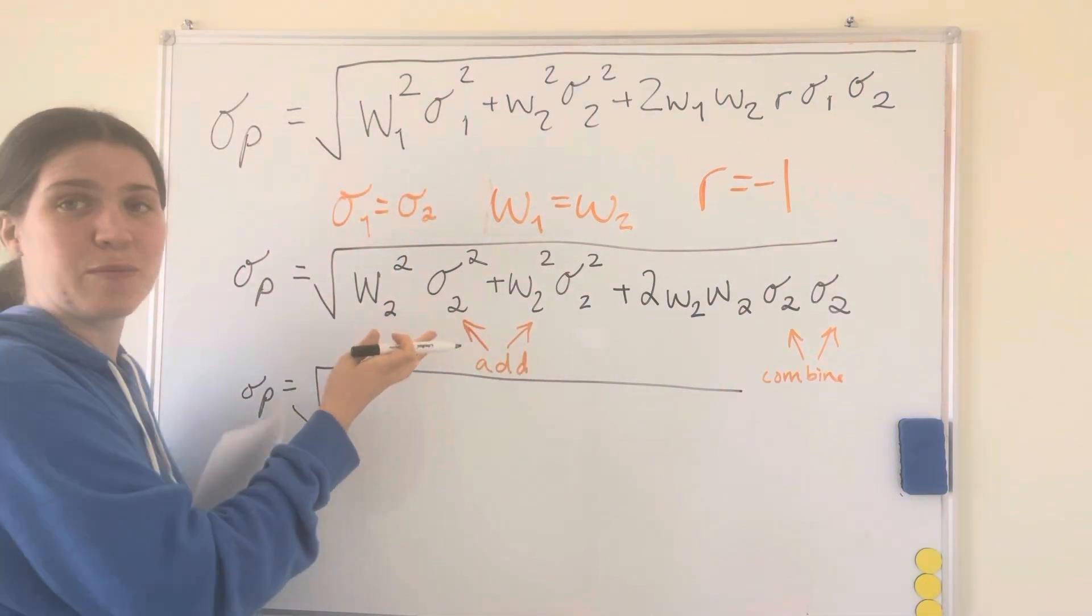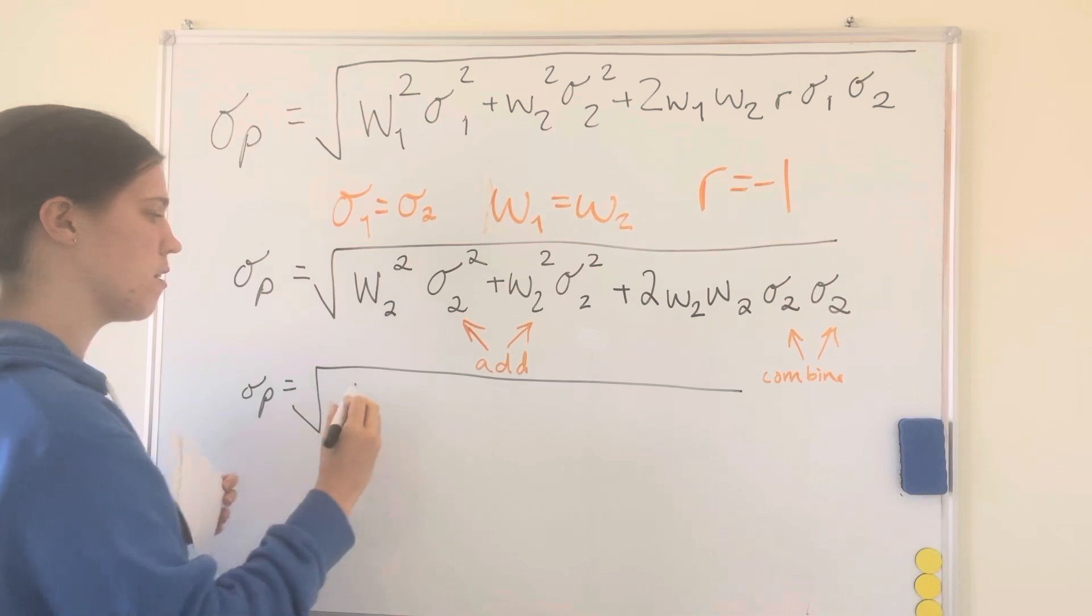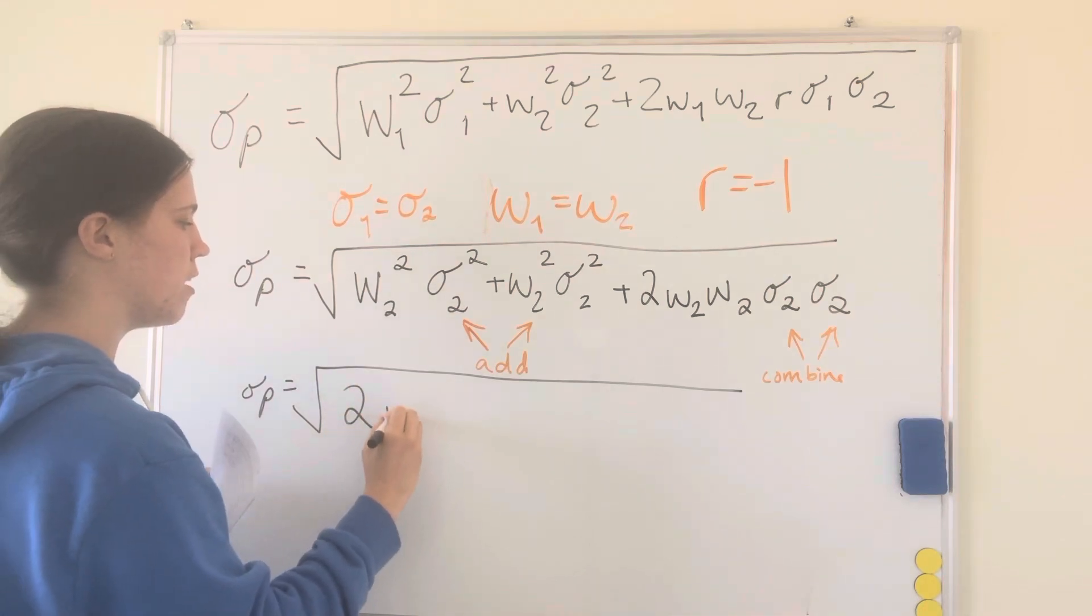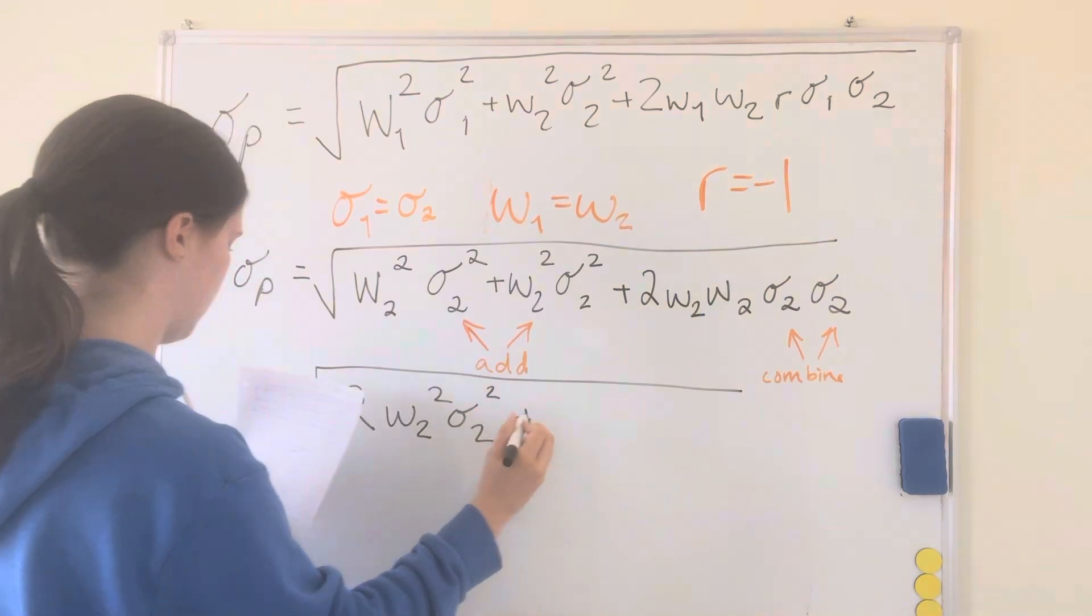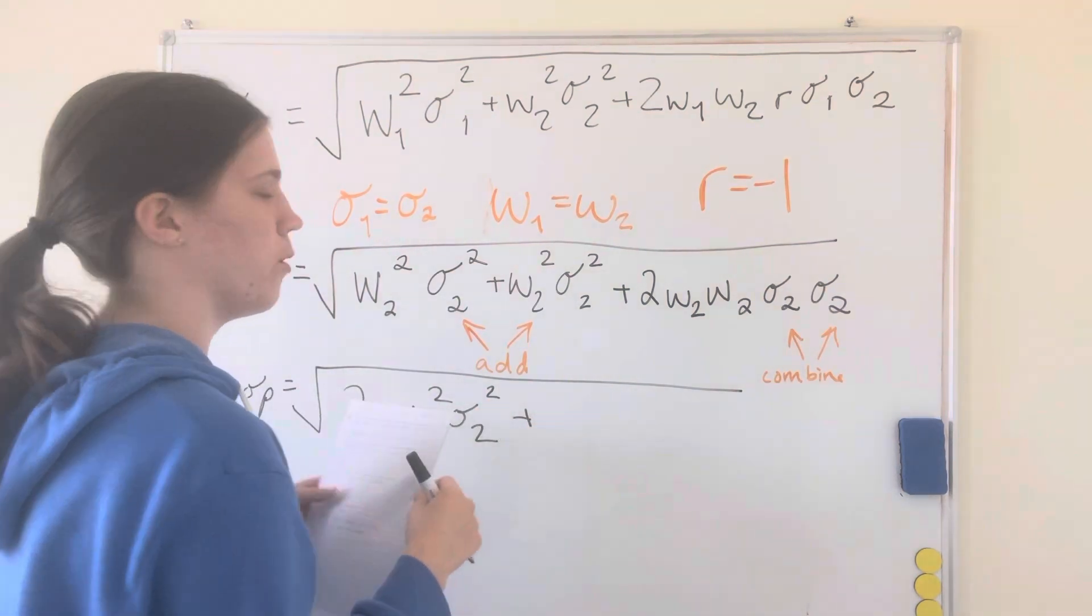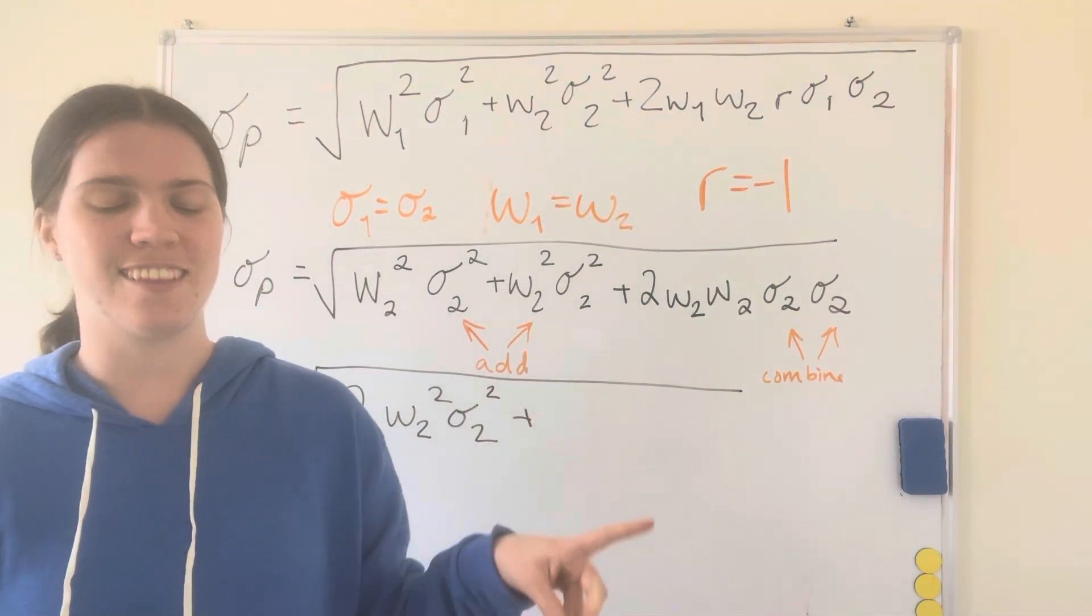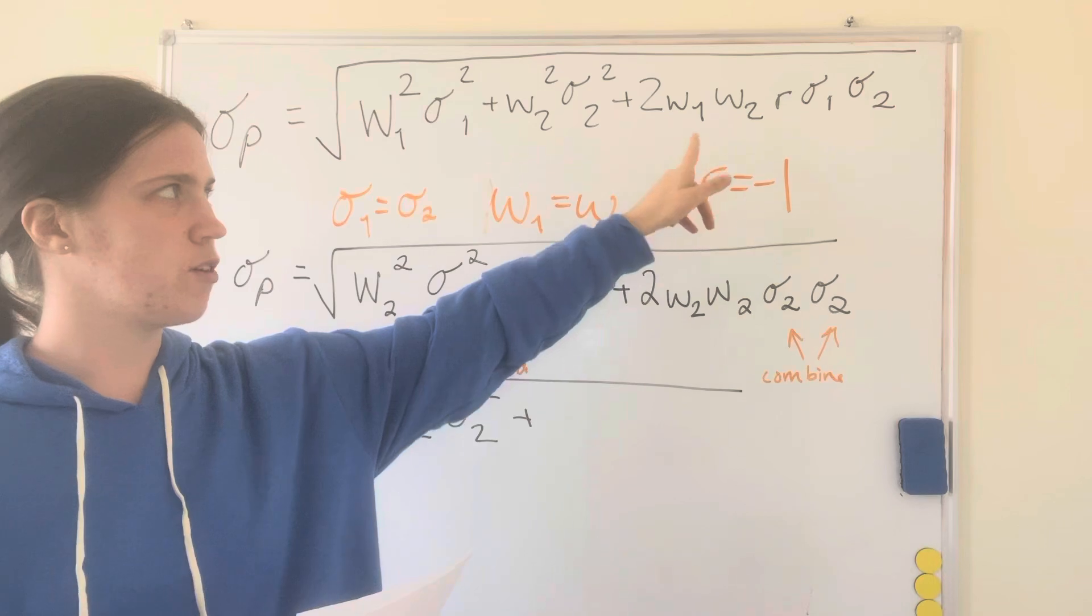And this is what we'll get. This could literally just be 1 plus 1 because it's the exact same thing, so we'll just put a 2 in front and then w2 squared sigma 2 squared.